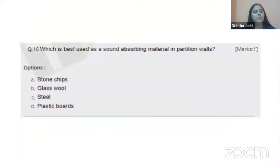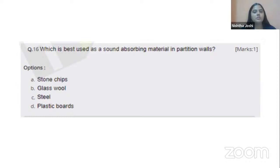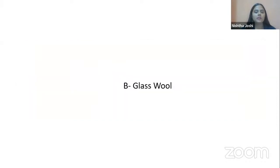Which is the best material used as a sound absorbing material in partition walls? The sound absorbing material commonly used in partition walls is glass wool.